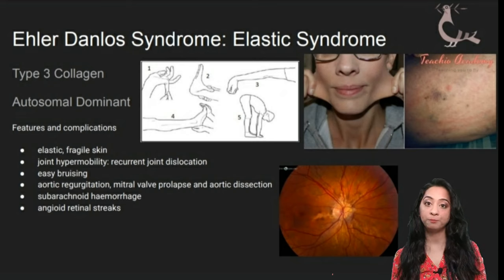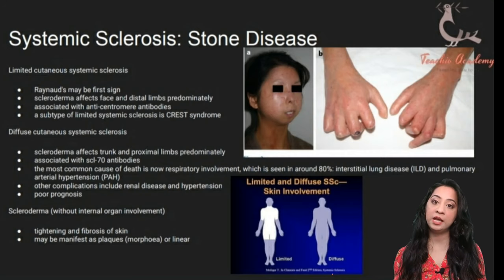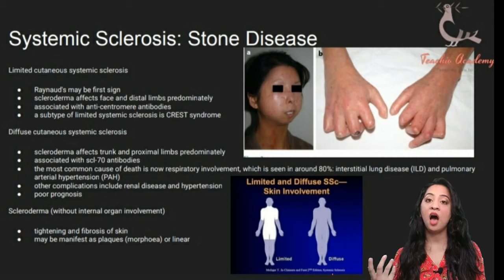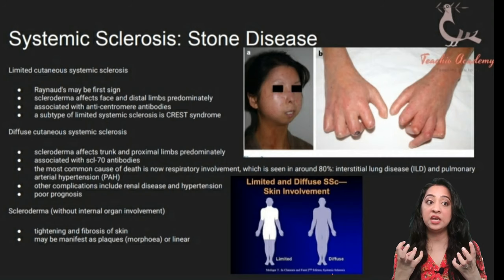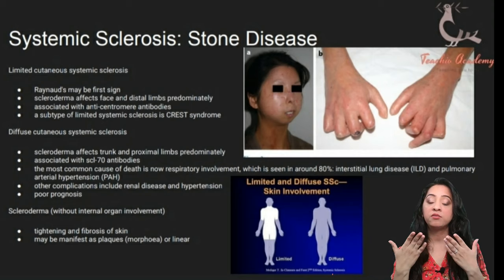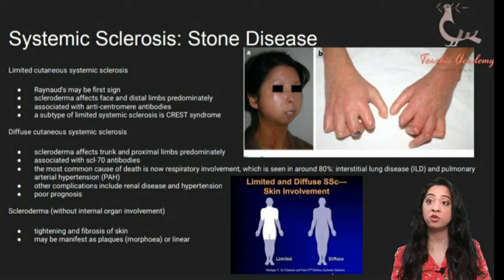Systemic sclerosis — I try to remember this as 'stone disease.' Sclerosis means hardening. Unlike the previous diseases where there was a deficiency of connective tissue, in systemic sclerosis there is an increased amount of collagen. So everything becomes the opposite — someone with a lot of collagen in their skin will have skin that looks very tightened, tight and shiny, with fibrosis making it look hard. The fingers also show a lot of tightening, deformity, and tight red hard skin.